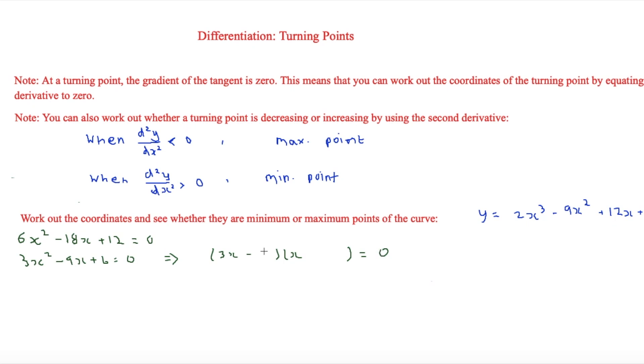But this will go to 3x - 6 and then x - 1. So therefore x = 2 and then x is also equal to 1. So that's our two points.